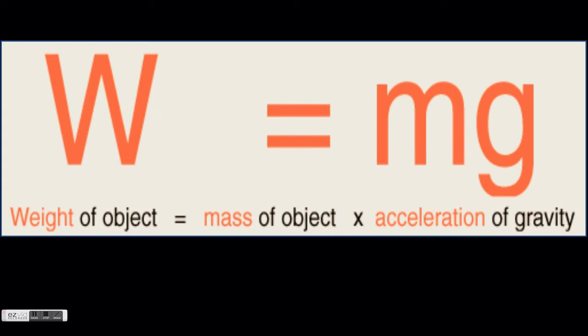On Earth, gravity is always equal to 9.8 meters per second squared. Gravity is always written with the unit meters per second squared. The amount of gravity will be different on different planets.